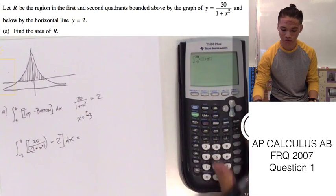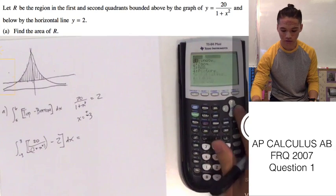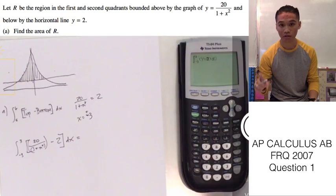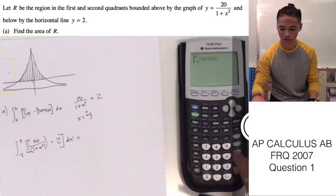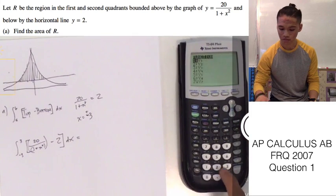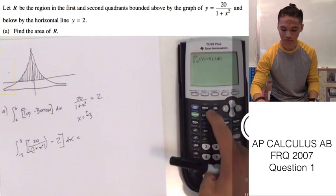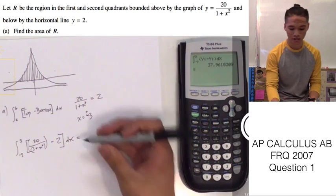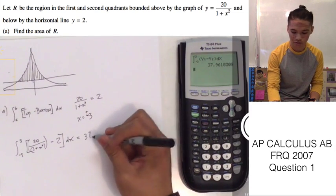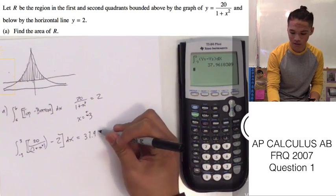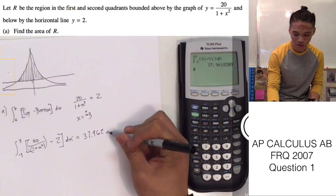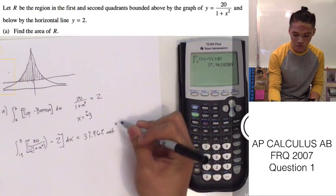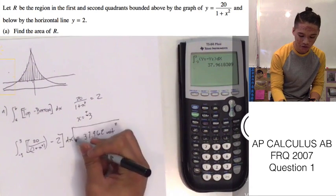Of our... Remember the representation that we already put. So y sub 1 minus y sub 2. Let the calculator integrate that. And we come up with 37.962 units squared, because this is our area of R.